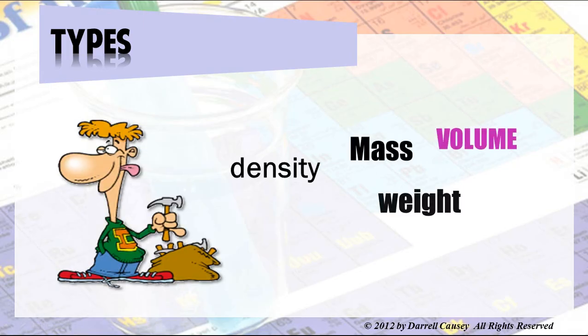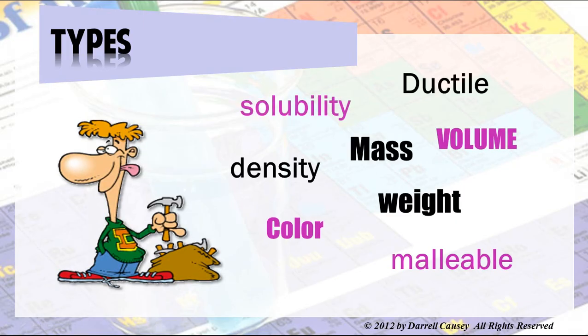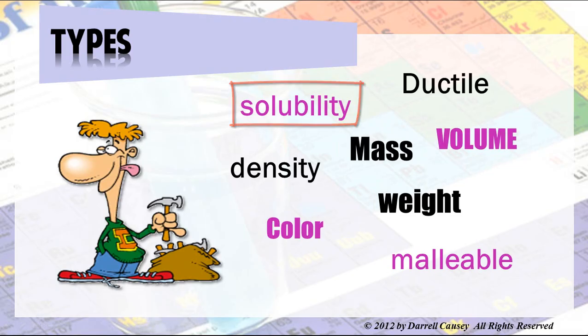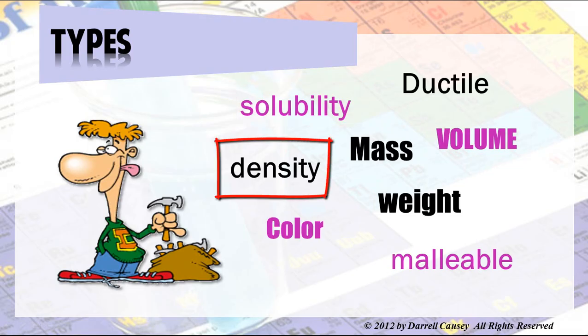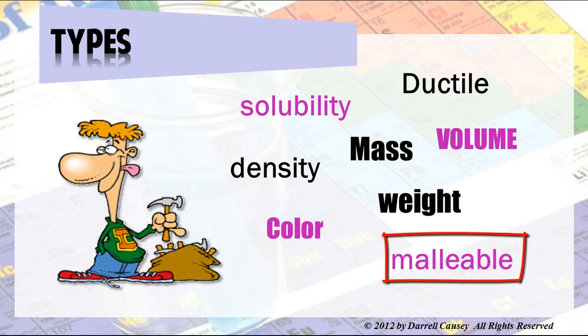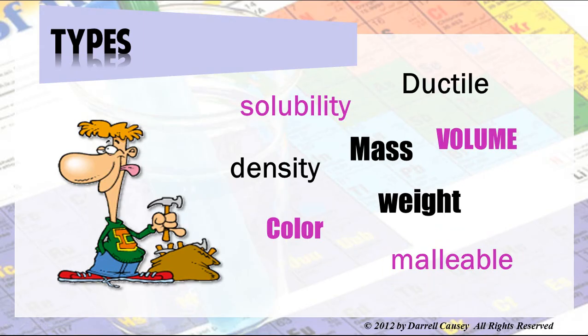Types of physical properties can be things like mass, weight, volume, solubility, and density — which is just your mass per volume — and malleable and ductile. Ductile is the ability of a substance to be drawn into wires. Malleable means that something can be hammered into a shape, such as gold or copper and some of those metals.